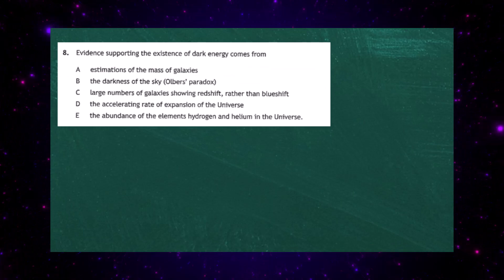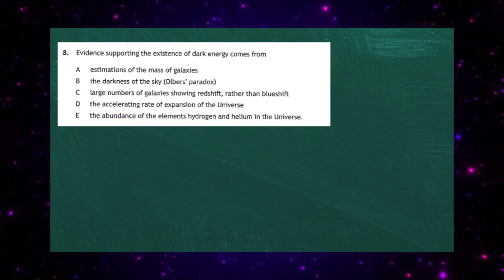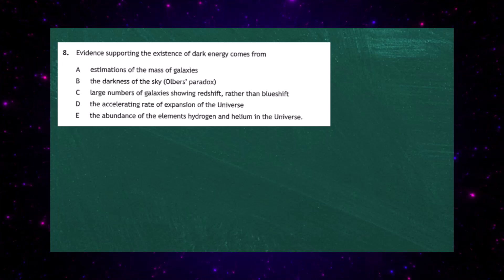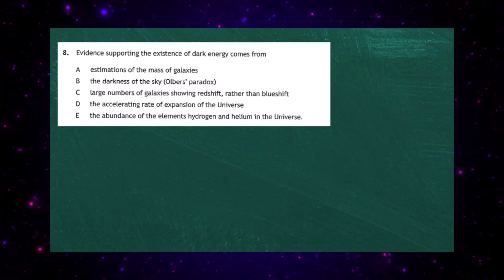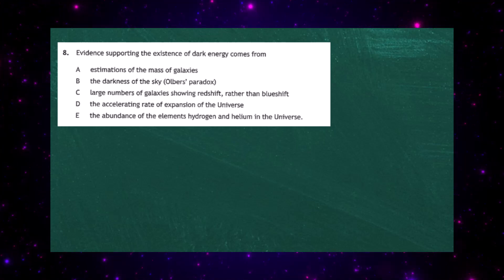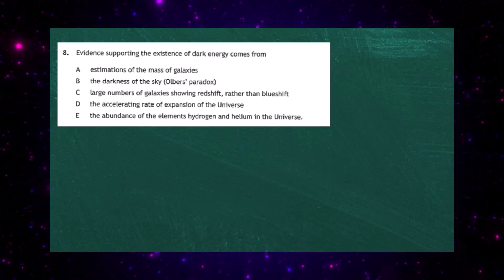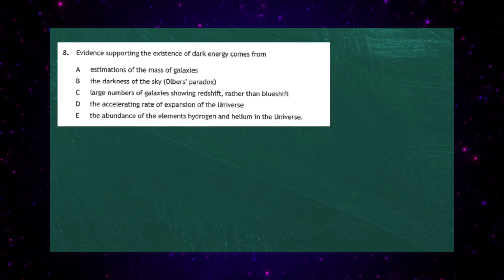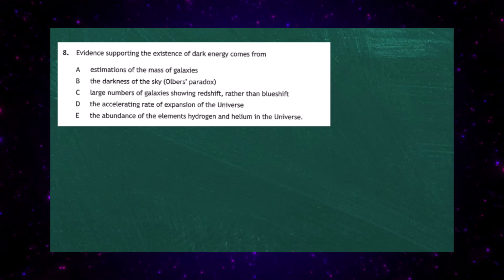Question 8 from the 2023 Higher Physics Examination, Paper 1. Evidence supporting the existence of dark energy comes from: A, estimations of the mass of galaxies; B, the darkness of the sky — Olbers' Paradox; C, the large numbers of galaxies showing redshift rather than blueshift; D, the accelerating rate of expansion of the universe; and E, the abundance of hydrogen and helium in the universe.